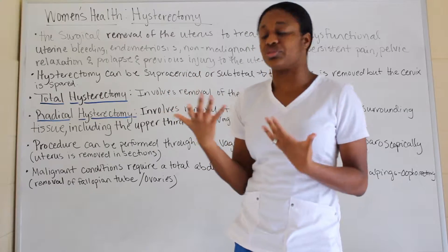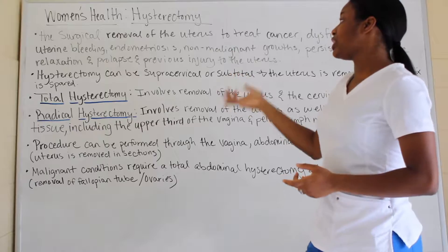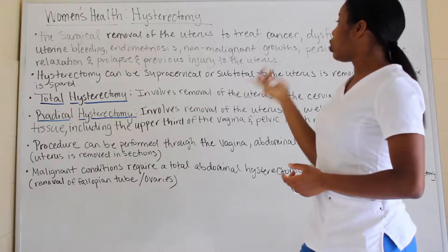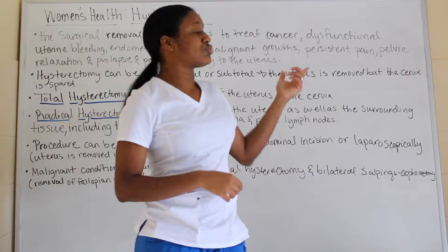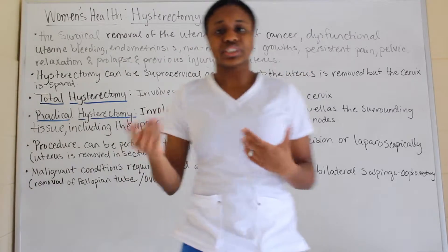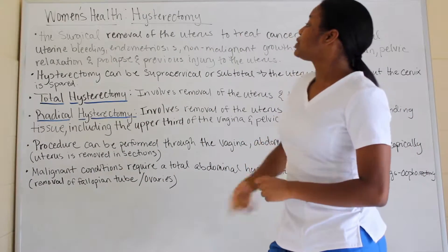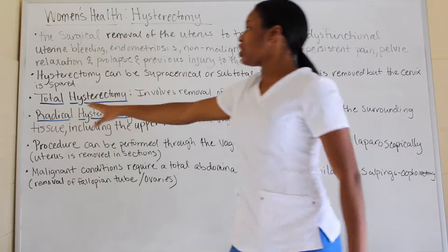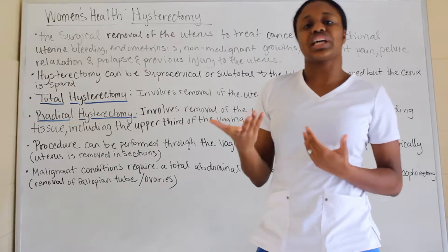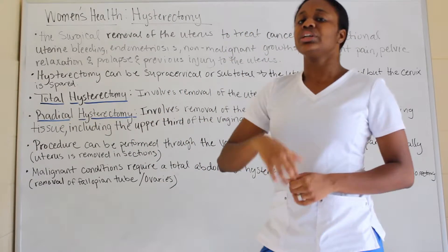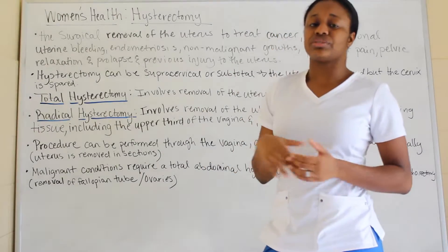A hysterectomy can be supercervical or subtotal, which means the uterus is removed but the cervix can still be spared or intact. Now we have two main types I've underlined in blue, because they like to ask questions about the difference between a total hysterectomy and a radical hysterectomy.